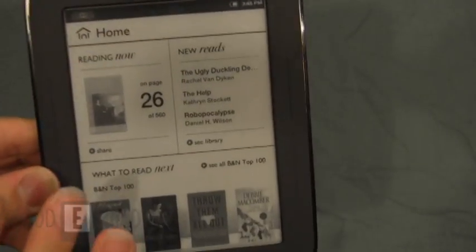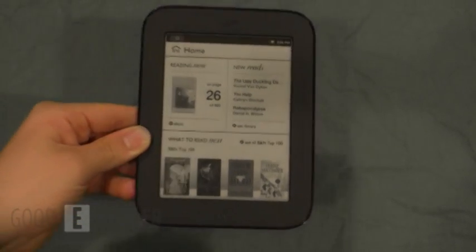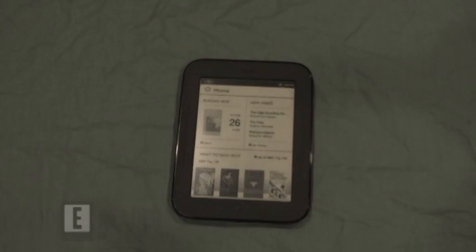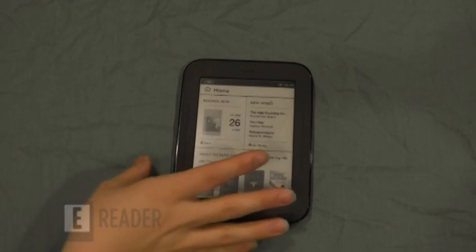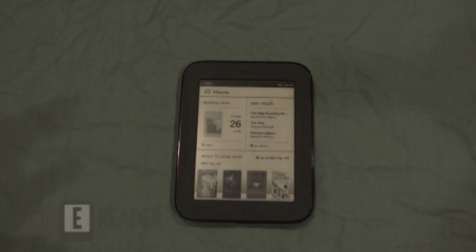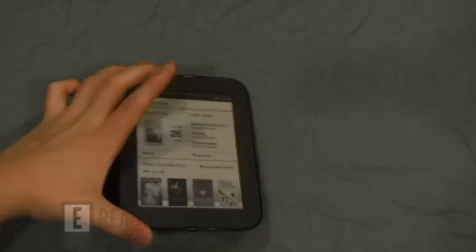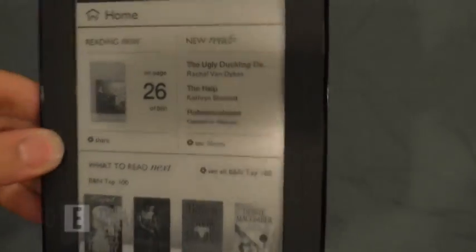This is because this is an e-ink screen. It's not a backlit LCD screen like a TV or cell phone. There is no backlight and this is full e-ink, meaning that it is much like a calculator screen, in the sense where it's all black and white and you do need light to view it.